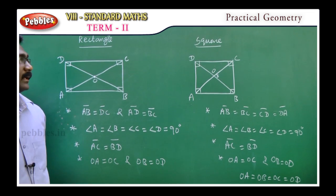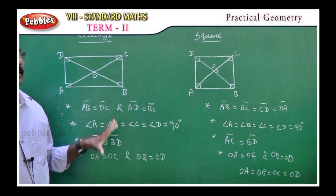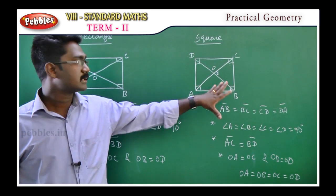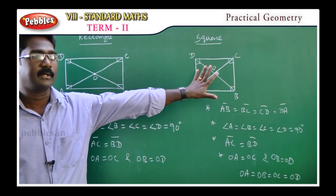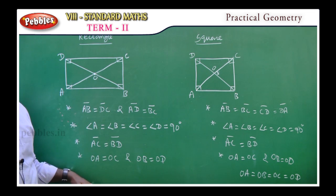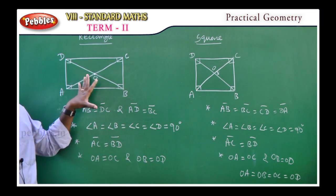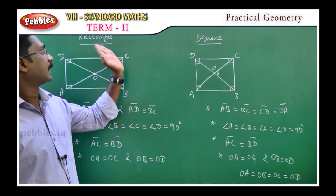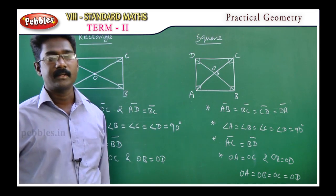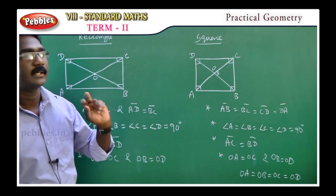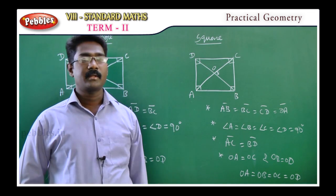So this is the square property. What is the difference between the two? In a rectangle, the opposite sides are equal. In a square, all the sides are equal. The rectangle and square share common properties but differ in that a square has all sides equal.